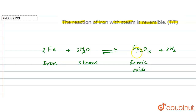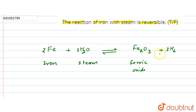Ferric iron reduces and oxidizes the formed H₂ back into H₂O, meaning this reaction is reversible. The reason is that ferric iron is more reactive than hydrogen according to the electrochemical series. So ferric ions are reduced back to iron, and they oxidize hydrogen.